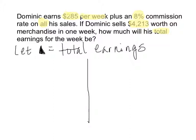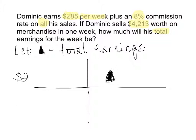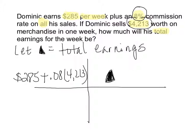Let's look at our balance beam. We have the total on one side by itself because everything else balances to it. On the other side, we know we have $285 — that's one part. But there's something else: the 8% commission. We know how much he sold — $4,213. So we have $285 plus 8%, which is 0.08, times $4,213. All of that equals our answer.